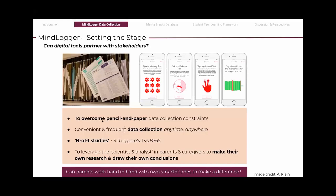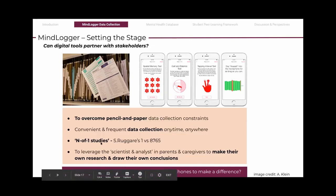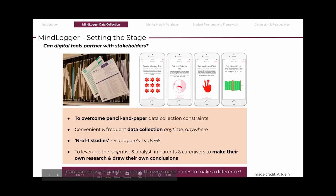Digital tools provide the opportunity to overcome pencil and paper data collection constraints for convenient and frequent data collection in real time and in natural environments. One story I really liked was when a person with Parkinson's disease spends only one hour in the whole year with her doctor and the rest of the 8,000 hours in self-care — this prompted her to create her own app to track her symptoms. And who can know the child better than the parents and caregivers who are constantly observing, analyzing and responding to find solutions? Can parents use their smartphones to make a difference?